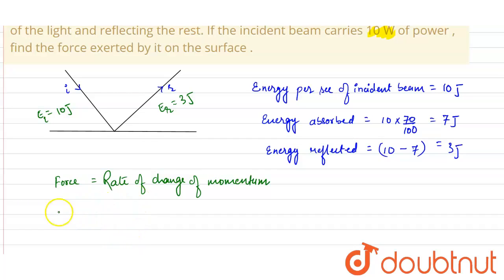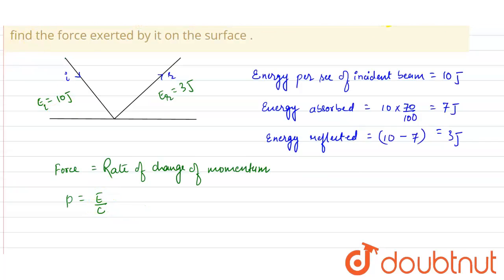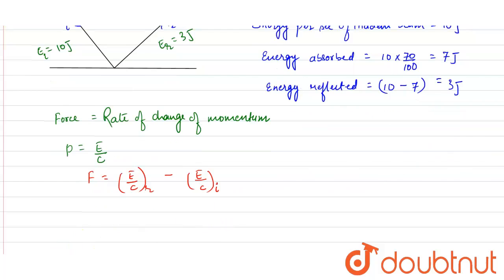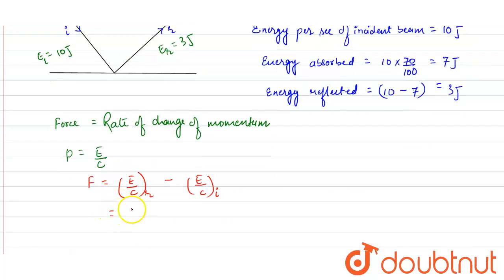Now the momentum is given as E/c, where E is the energy of the photon. So the force will be F = E/c of the reflected light minus E/c of the incident light, which is 3/c minus (-10/c).